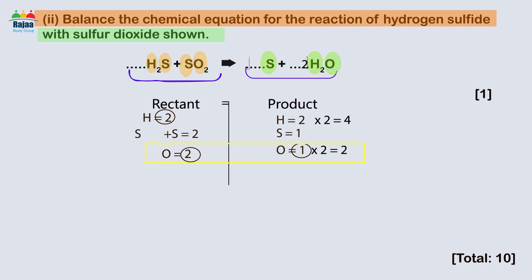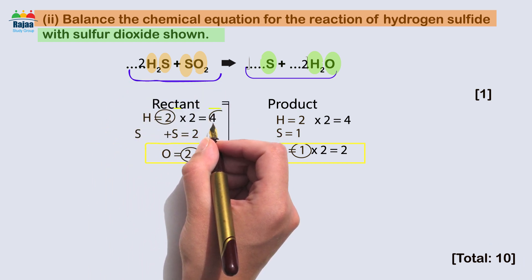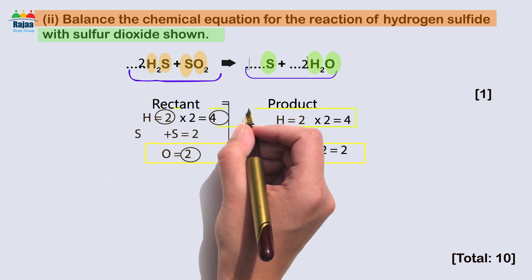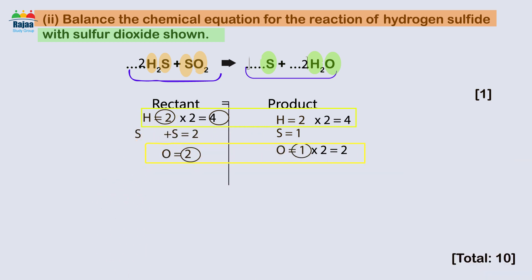Therefore, we change the H2S coefficient to two because two times two equals four hydrogen. Hydrogen is now balanced on both sides. However, sulfur remains unbalanced.